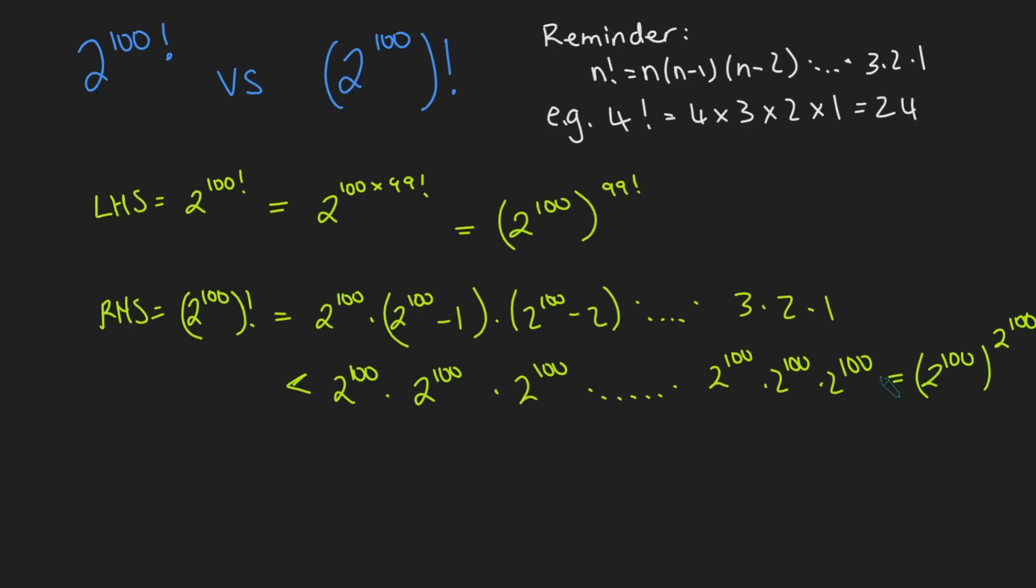So I've got that my right-hand side is definitely less than this. Now, here's where I'm going to make my claim. I'm going to claim that this number here is bigger than this. So I claim that my left-hand side is bigger than my right-hand side. And so in order to prove that, I need to prove that this is bigger than this.